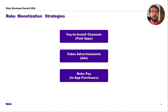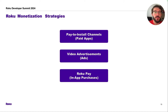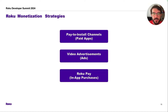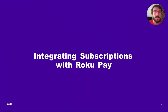In summary, there is no silver bullet. Each monetization method comes with its own pros and cons. Pay to install offers immediate revenue but limits your reach. Ads expand your audience but can impact user experience and require backend management. And Roku Pay supports subscriptions and one-time purchases, but complicates pricing and conversion strategies. At the end of the day, your best approach depends on your app's content and your target audience. But Roku gives you the tools to implement all of them.